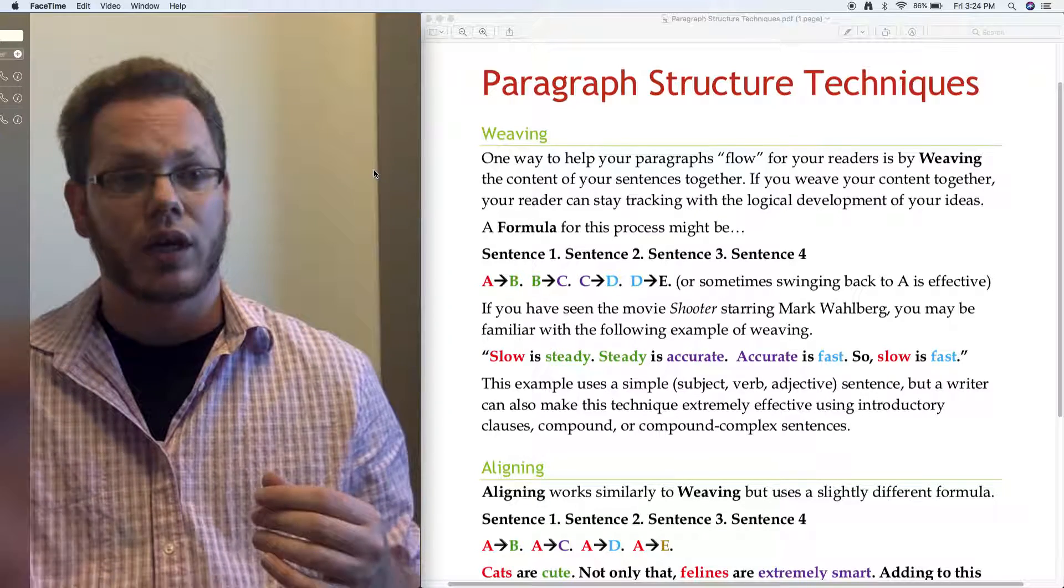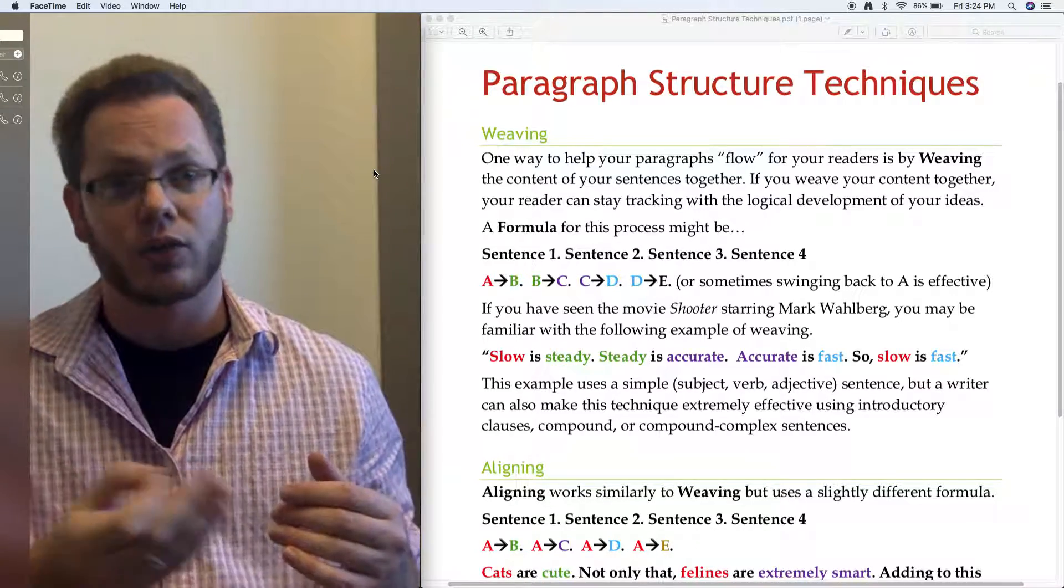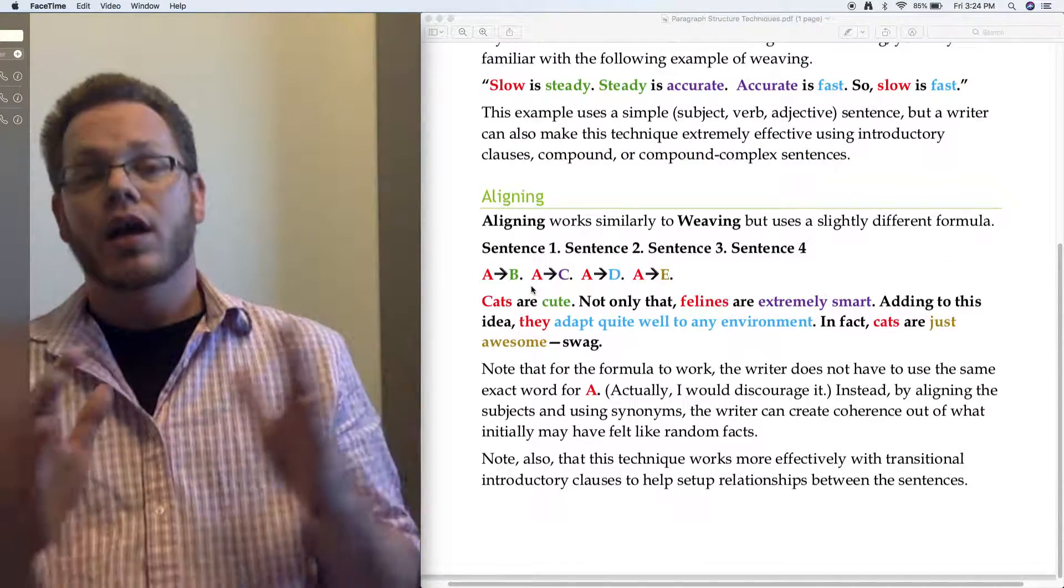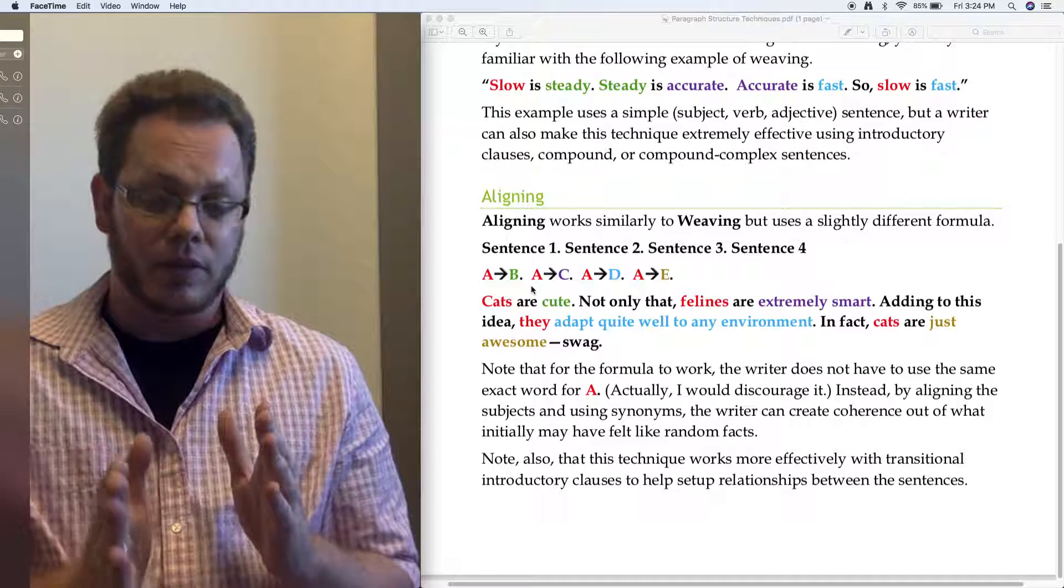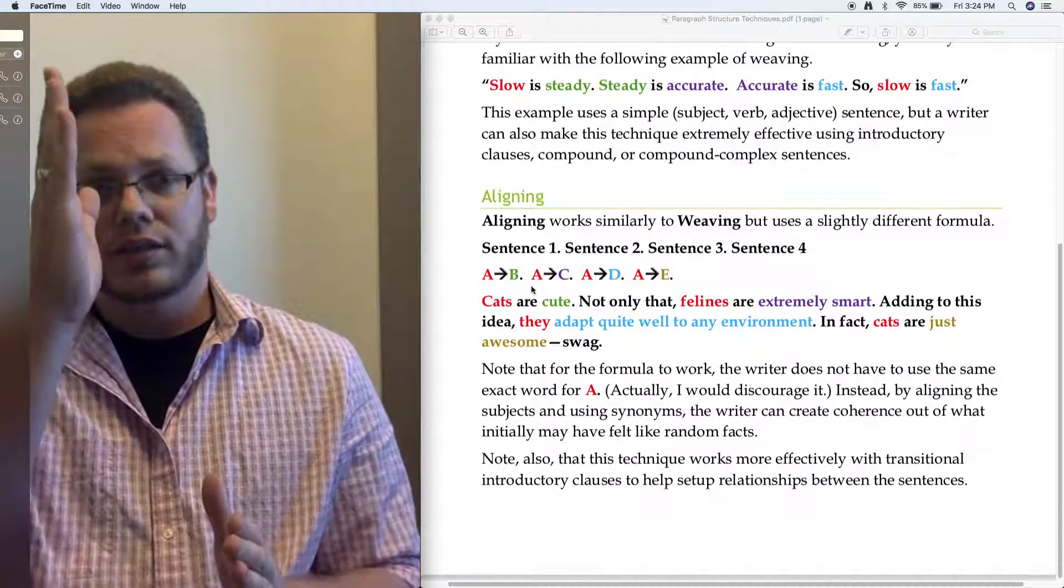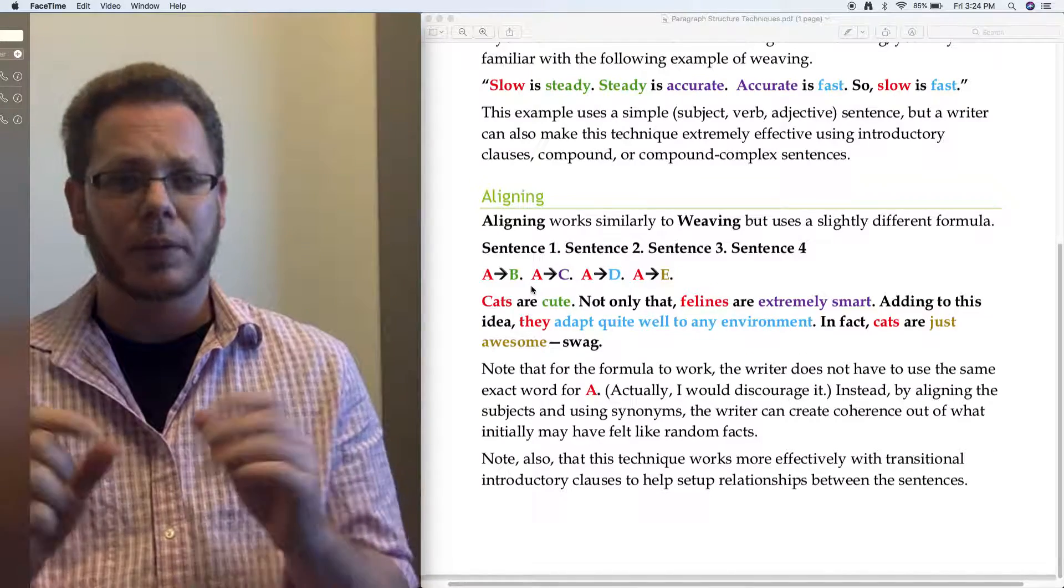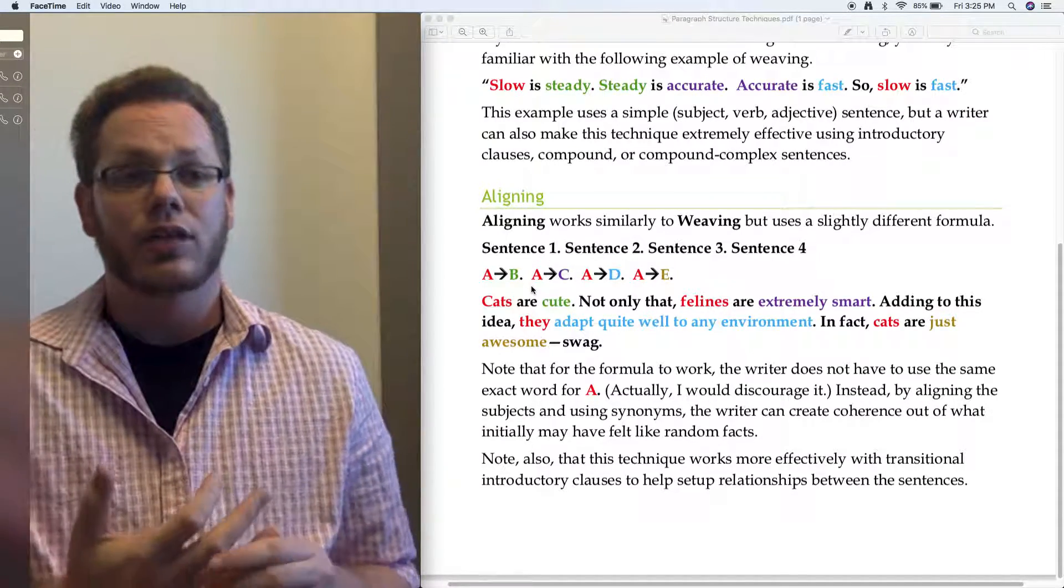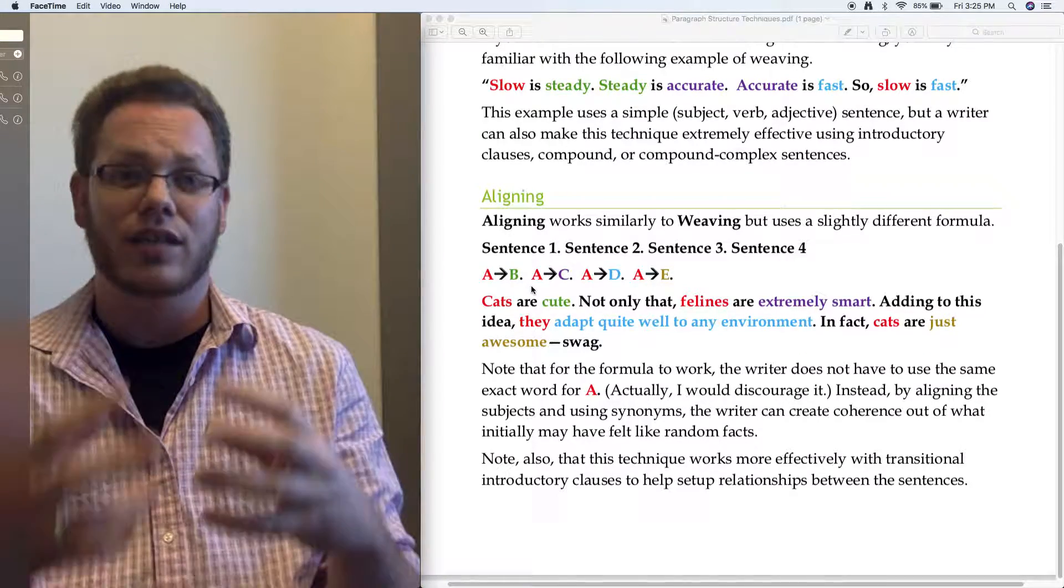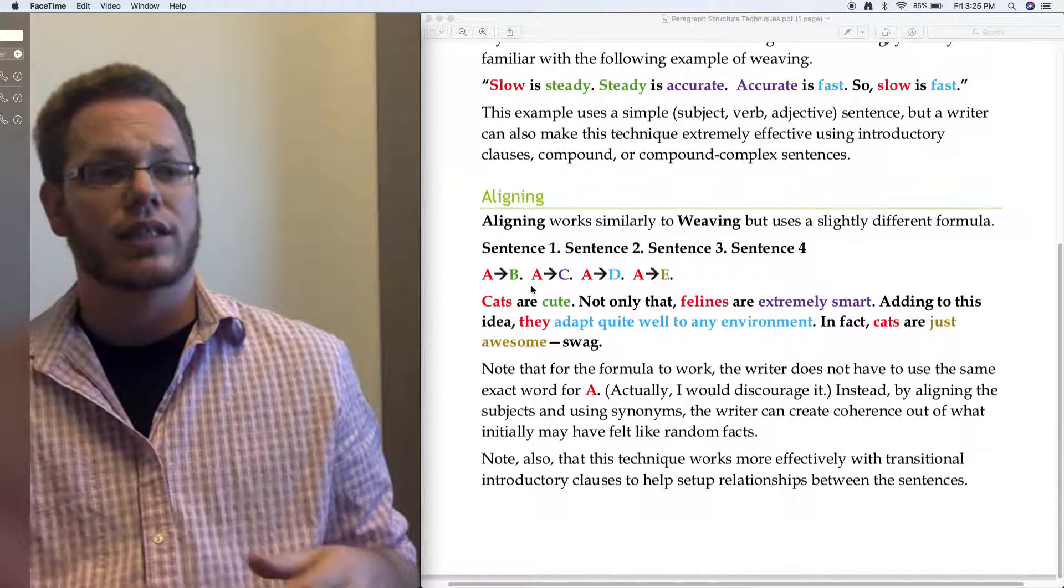Weaving is going A to B, B to C, C to D, D to E. So it's like this writerly cross stitch. After that, we have aligning. Instead of going A to B and then building on B to get to C and building on C to get to D, aligning takes your main subject and just makes that the main focus, whatever your topic is. It makes it the center focus of each sentence. That usually means it takes on that initial grammatical subject of the sentence role.